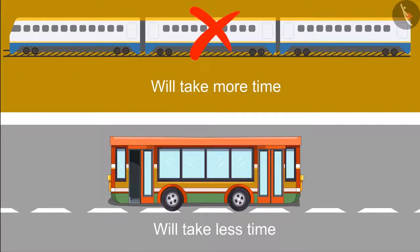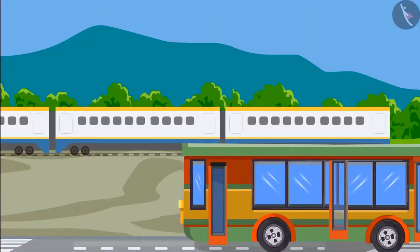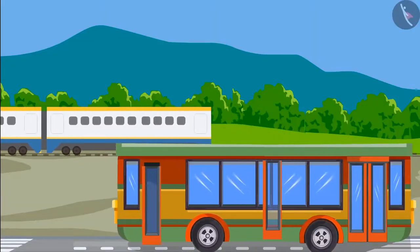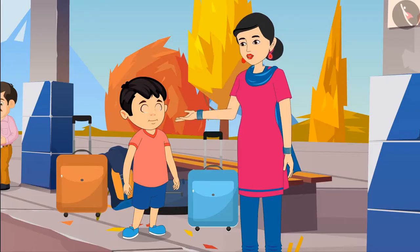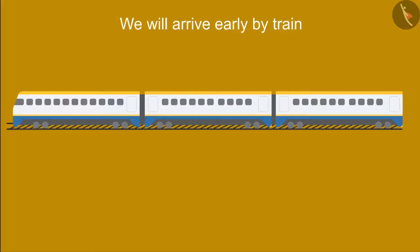His mother corrects him: "No, Chotu, it's not like that. The train runs faster than the bus. The length of the train is more, but it runs faster. So, we will reach by train quickly."